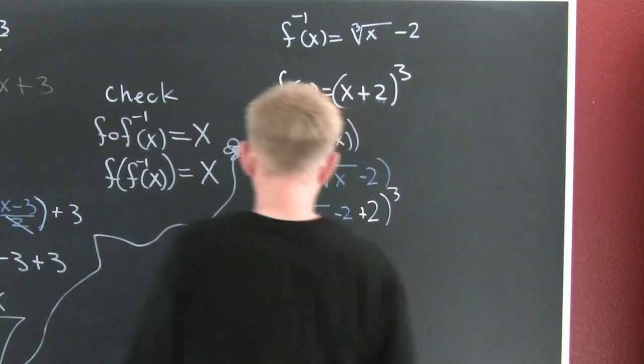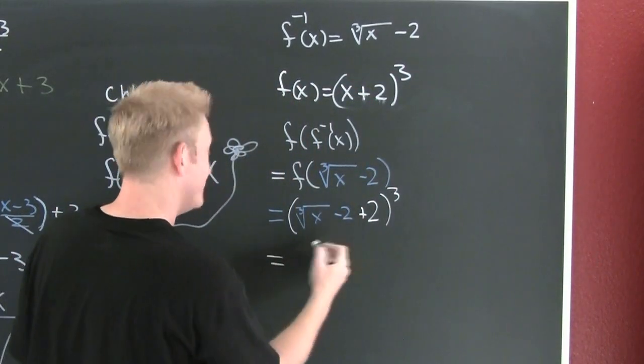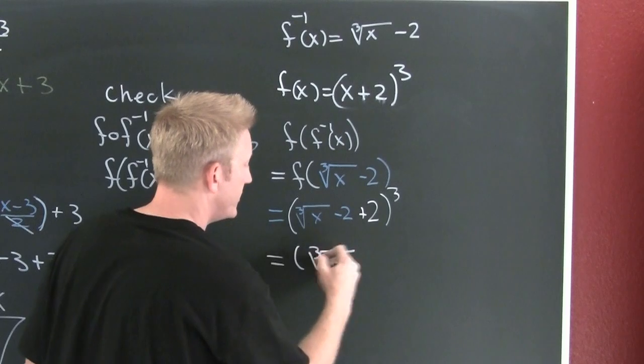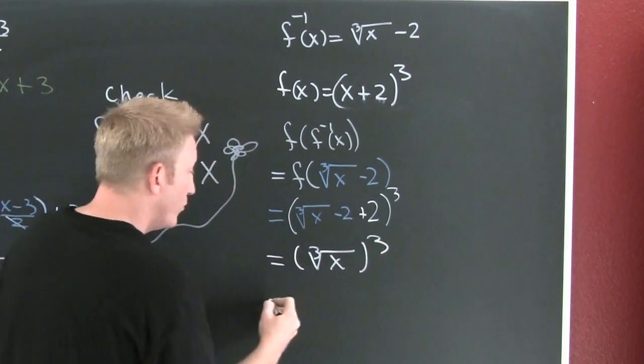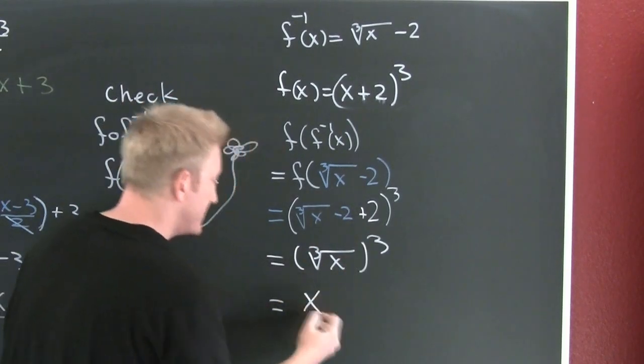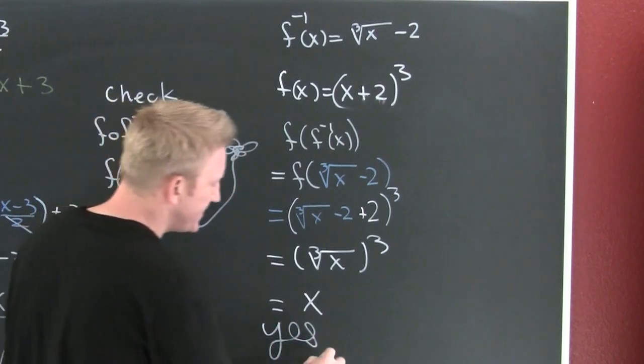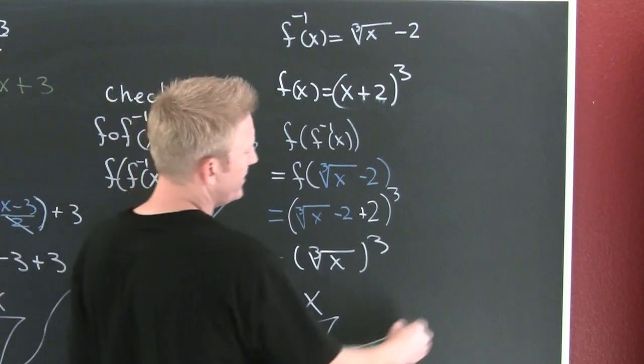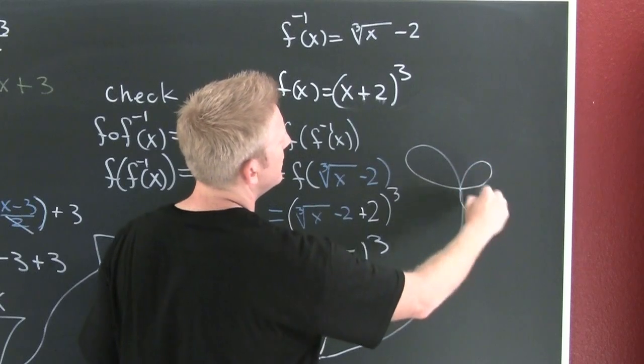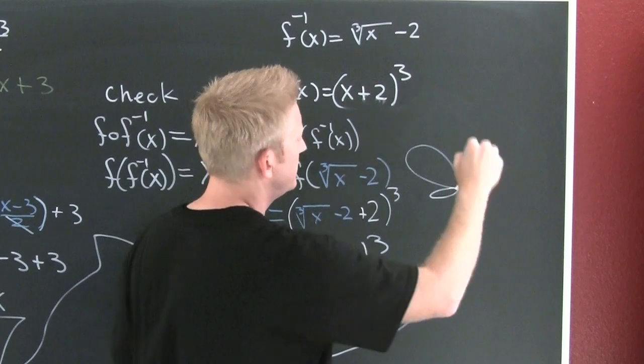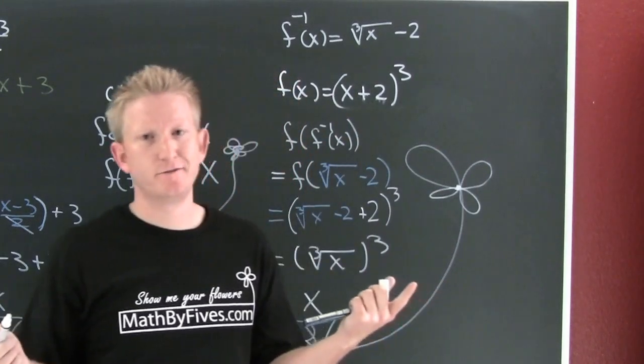So then, that's the third root of x to the third, which is going to get you x. And yes, it is an inverse. That's a much nicer flower.